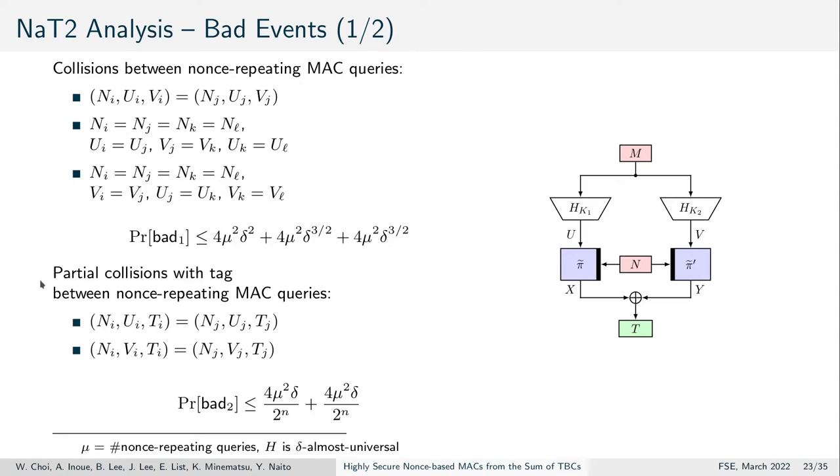Moreover, we consider partial collisions between nonce-repeating MAC queries where the tag is involved. And get a second bound on those, where the total n results, since we are in the ideal world and there is a probability of 2^(-n) to collide in the tag.